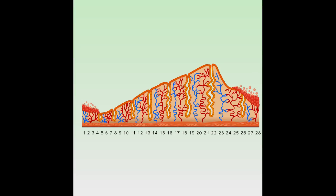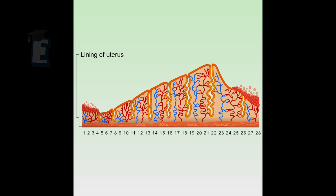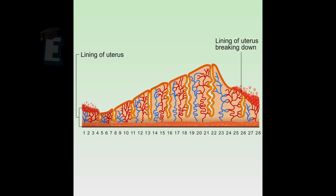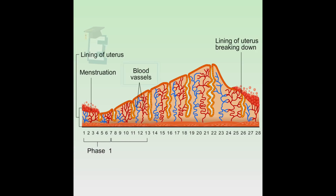The menstrual cycle is divided into three phases. In the menstrual phase, the ovum not fertilized by sperm in the oviduct will reach the uterus. After this, the tissue that has been formed on the uterus sheds. This shedding is called menstruation and it will go on until five days.